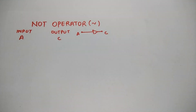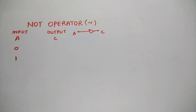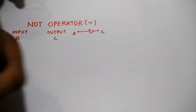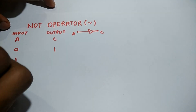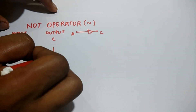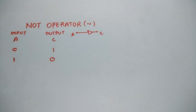You can see the symbol in the bracket. This is the NOT operator — as you can see there is only one input and one output. It actually reverses the input, so we can say it is a complement. As per the condition, if the input is low the output will be high, and if input is high then the output is low. This is the NOT operator.